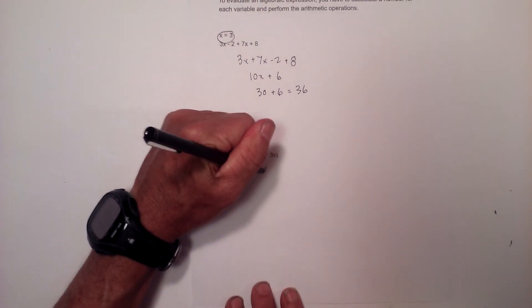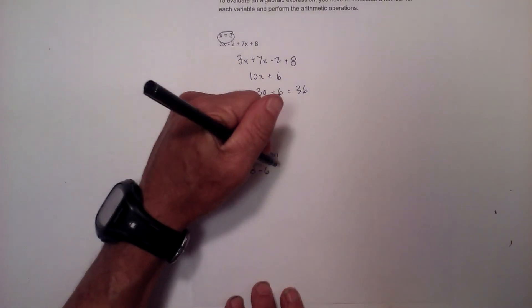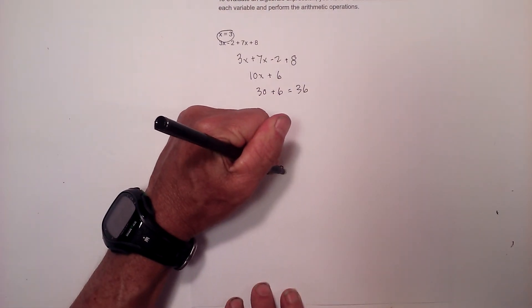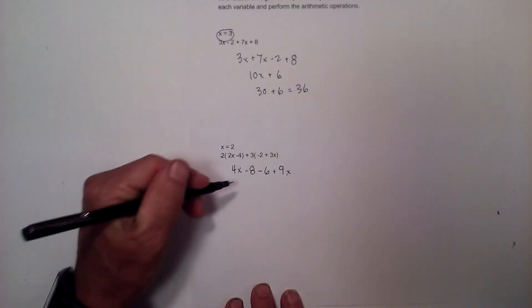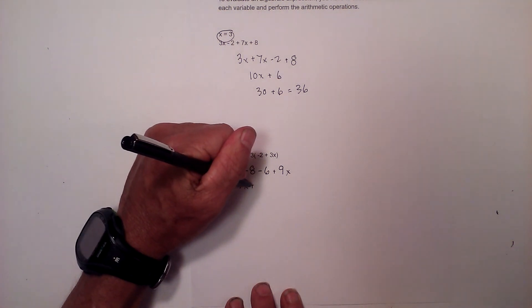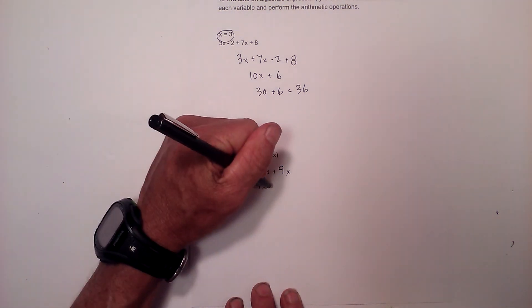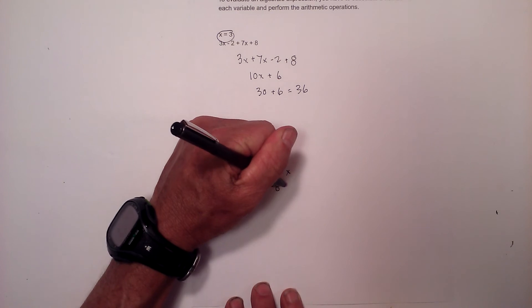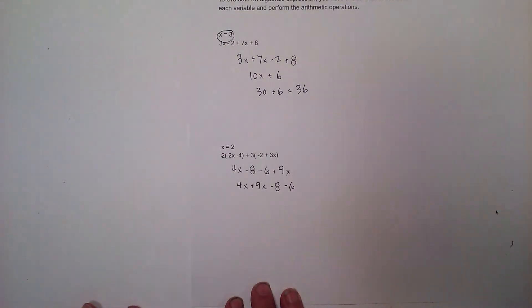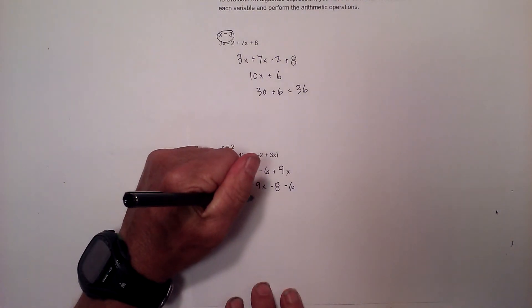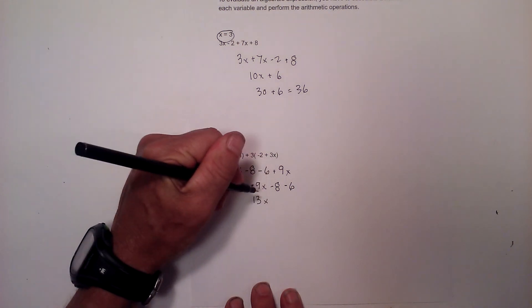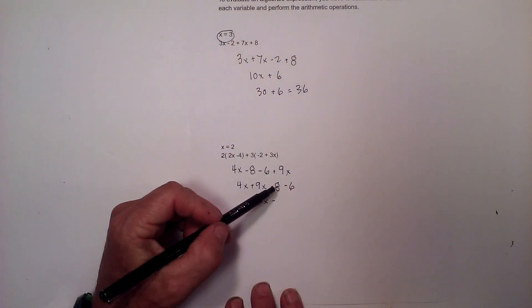3 times negative 2x is negative 6x, and 3 times 3 is positive 9. I'm going to put similar terms next to each other. Now I combine like terms: we have 13x, and negative 8 plus negative 6 equals negative 14.